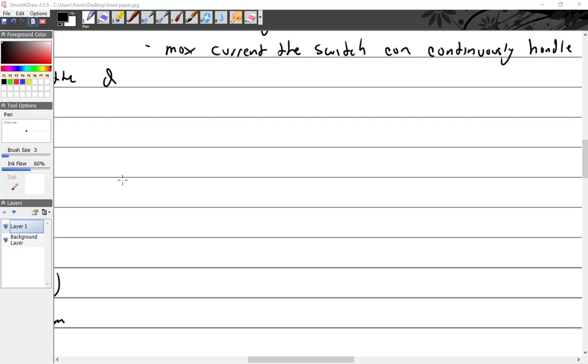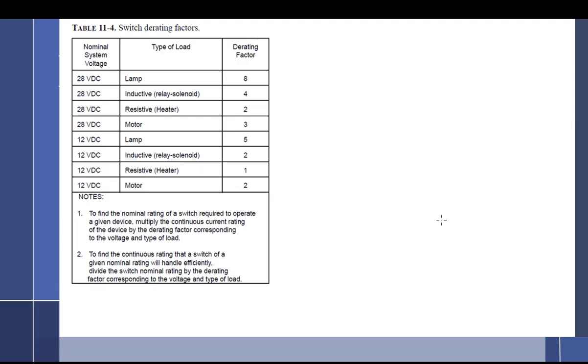You should not use AC derated switches in DC, so that would just stand to reason. Let's look at how that would work. So here's Table 11-4 out of AC 4313, and it shows the derating chart.